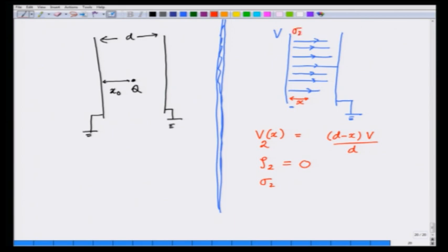That means there is some positive sigma 2 here, negative sigma 2 here, such that sigma 2 equals epsilon 0 times field in this situation which is epsilon 0 v divided by d. You know all this from the capacitor problems you have solved in your twelfth grade.